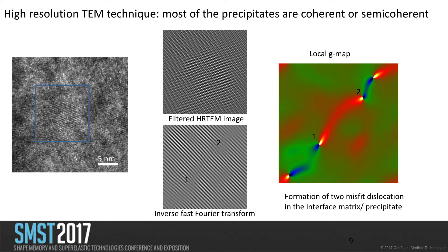Performing GPA — geometrical phase analysis — which shows the strain map of the high-resolution images, the dislocations are shown as hot spots. For an edge dislocation, where one atomic plane is inserted, you have compression and tension on opposite sides of the extra half-plane, so the hot spots shown as yellow and blue indicate the presence of dislocations. This is consistent with positions one and two, formed at the interface, confirming that these are not fully coherent precipitates — they are semi-coherent precipitates.